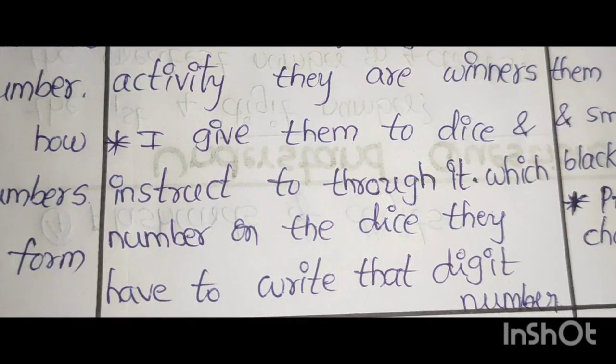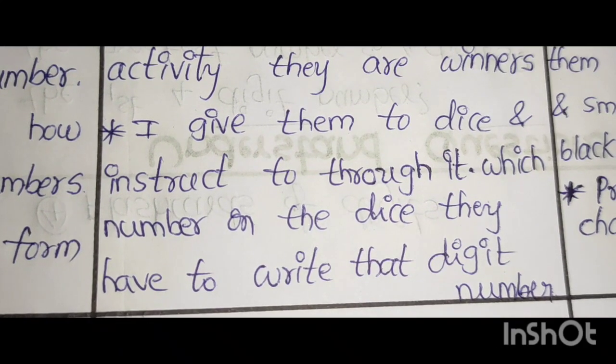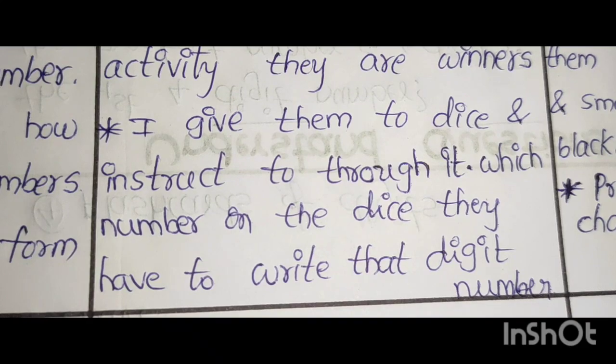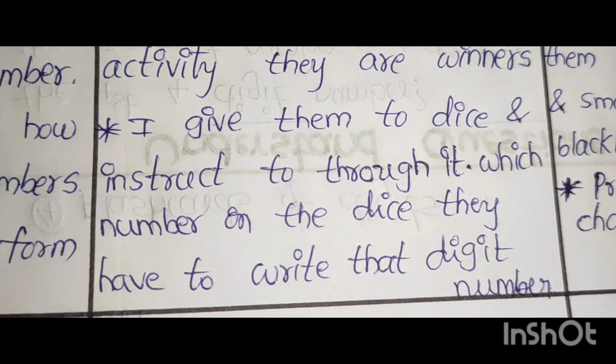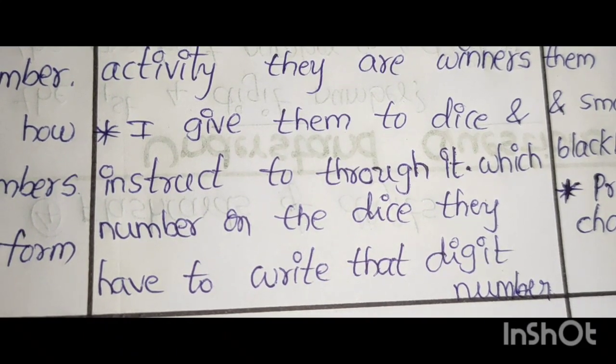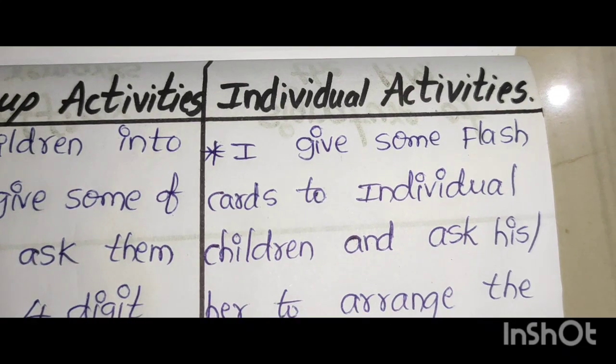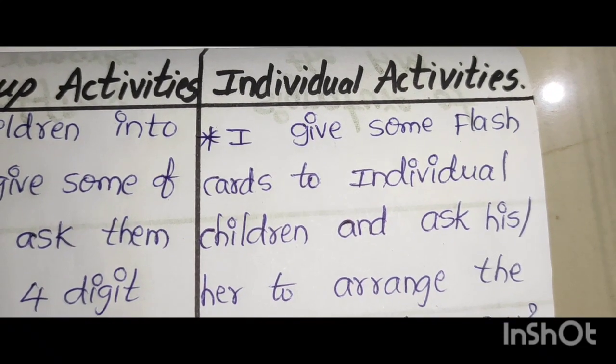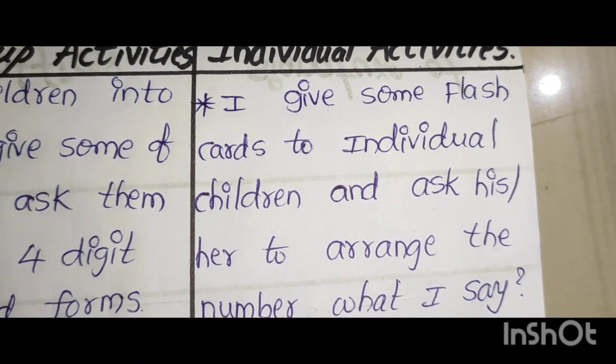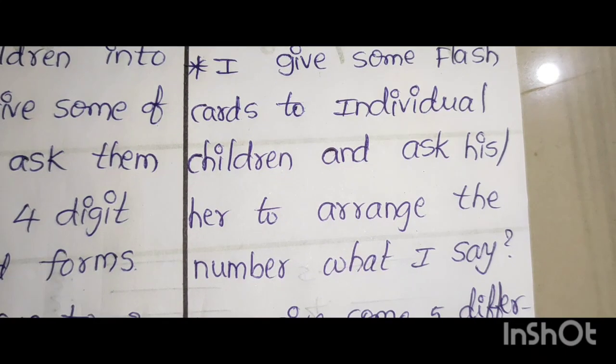I give them 2 dice and instruct to throw it. Which number on the dice they have to write that digit number. Individual activities. I give some flashcards to individual children and ask his or her to arrange the number what I say.